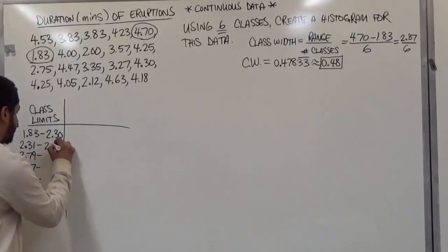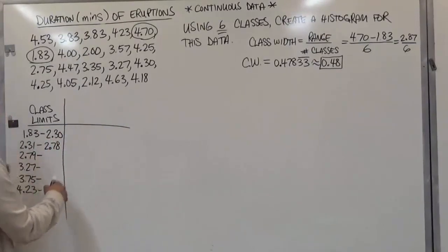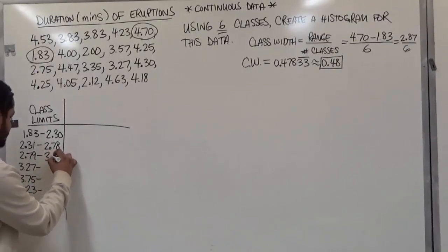So the next number here is going to be 2.78 when we add 0.48. And we continue to add the 0.48 going downwards to this column. Make sure you're using the calculator when doing it.